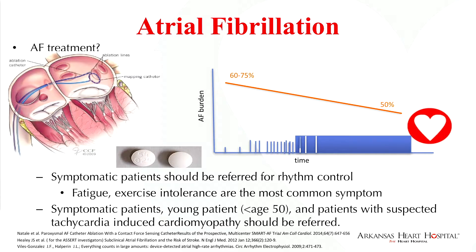I want to impress upon you the importance of early referral for rhythm restoration. The success rate of a single PVI procedure at one year in a patient who has paroxysmal atrial fibrillation is much higher than later on when they have persistent atrial fibrillation and the substrate exists throughout the rest of the atrium. The 2014 guidelines for atrial fibrillation also highlight sending very symptomatic patients, minimally symptomatic patients who are young — less than age 50 — and certainly patients where you suspect a tachycardia-induced cardiomyopathy that may be reversible with rhythm restoration.